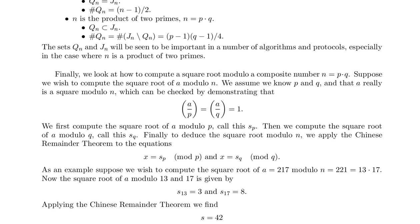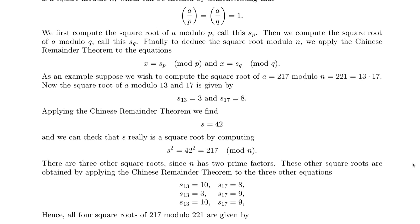Applying the Chinese Remainder Theorem, we find s equals 42. And we can check that s really is a square root by computing s squared equals 42 squared equals 217 mod n.